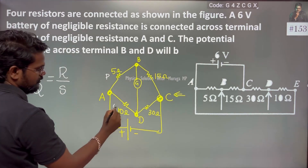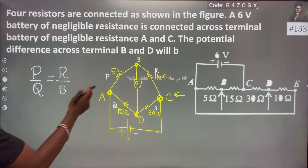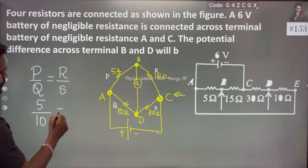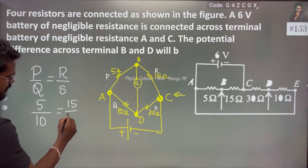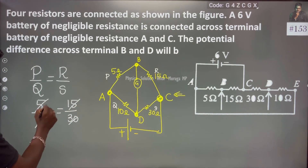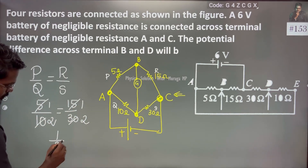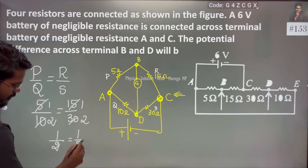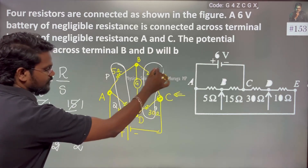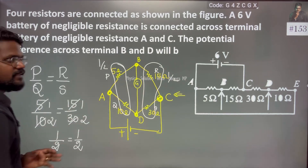P is 5, Q is 10, R is 15, S is 30. So, 5 by 10 equal to 15 by 30. If we divide, this becomes 1 by 2 equal to 1 by 2. So P by Q equals R by S — they are the same.